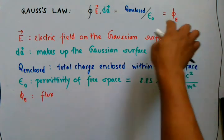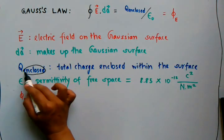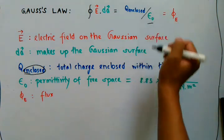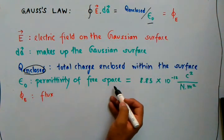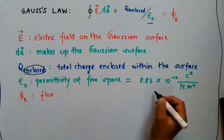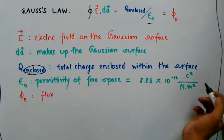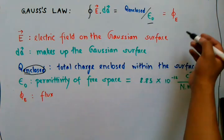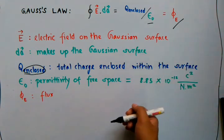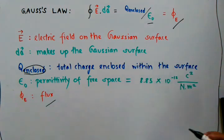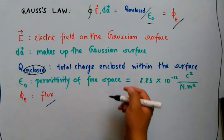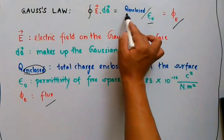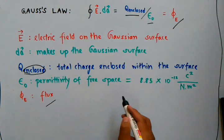Epsilon_0 is the permittivity of free space. It's a constant and its value equals 8.85 × 10^-12 C²/(N·m²). Phi is the flux. Now you see that given the charge enclosed inside the surface,